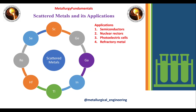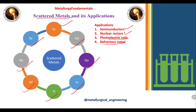Next are scattered metals and their applications, used in semiconductor industries, nuclear reactors, and photoelectric cells. The common scattered metals include scandium, Se, Re, Hf (hafnium), tellurium, indium, gallium, and germanium.